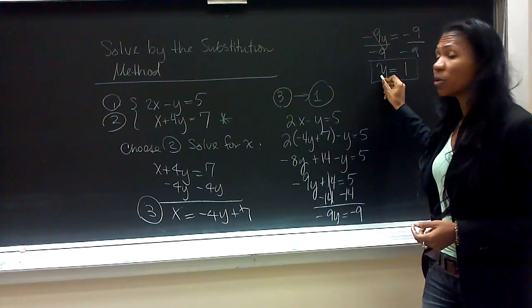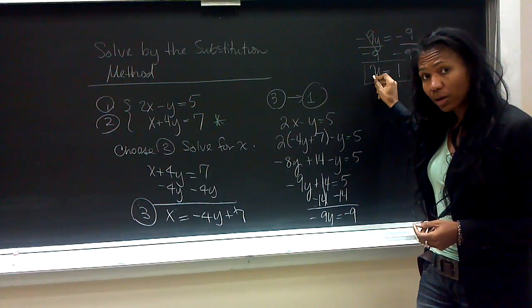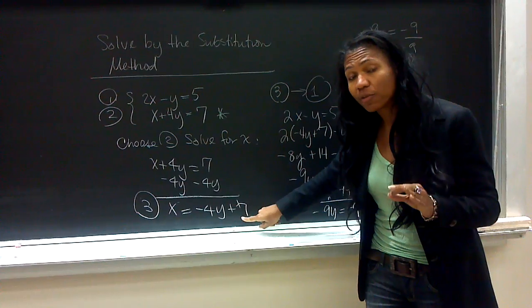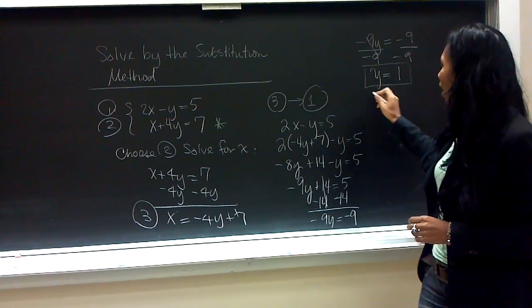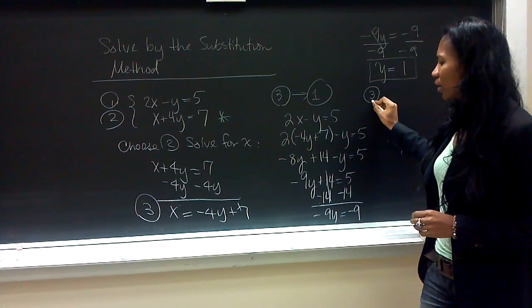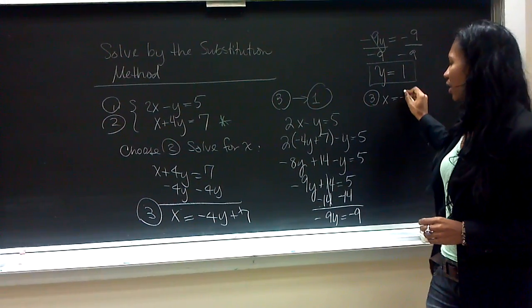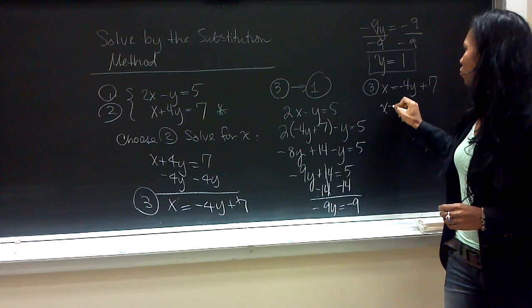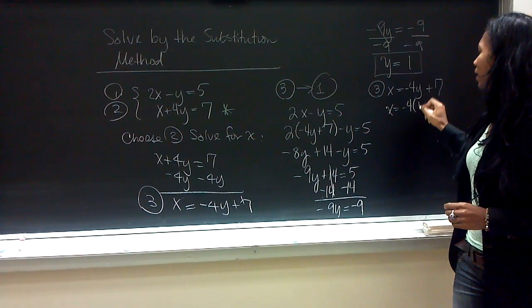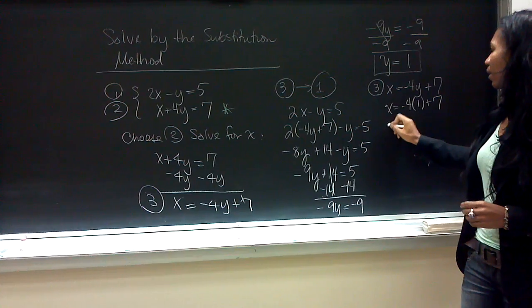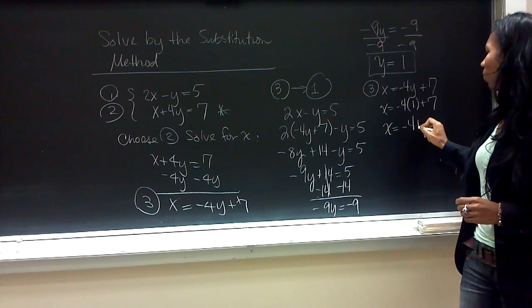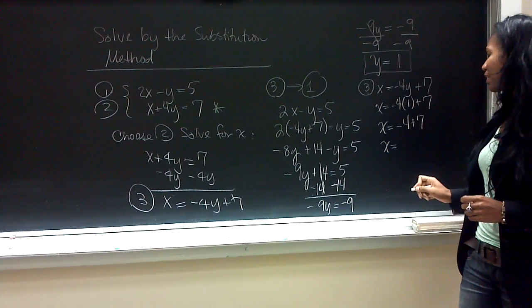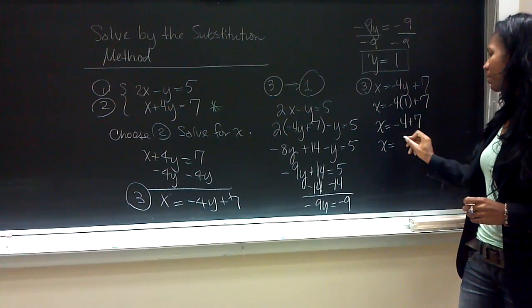So, what we do now is we place our result, which is y equals 1, into equation 3 to find out our other variable. So, now we take equation 3, which is x is equal to negative 4y plus 7, and we substitute 1 in place of y. We have negative 4 plus 7, which gives us our x value of 3.